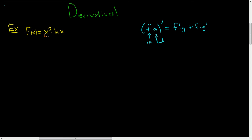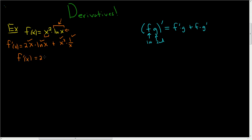Now let's do this problem. This will be the first and this will be the second. So f prime of x: the derivative of the first is 2x — you just bring the 2 down — times the second, which is the natural log of x, plus the first, which is x squared, times the derivative of the second piece. The derivative of the natural log of x is just 1 over x. So f prime of x is 2x natural log of x — here you have two copies of x, here you have one copy, so you lose an x — plus x. So that is the answer.